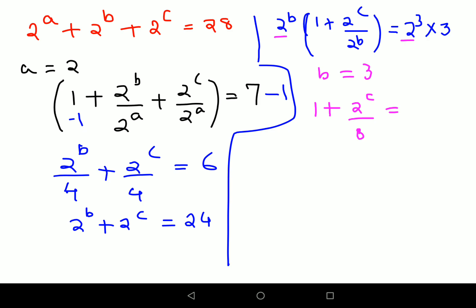Now again, subtracting both sides by 1, I'm left with 2 raised to c upon 8 equals to 3 minus 1, which is coming out to be 2. So here you can say that 2 raised to c is coming out to be 16, multiplying both sides by 8. So basically I can say c is nothing but... 16 is 2 raised to 4, so therefore the value of c is nothing but 4.